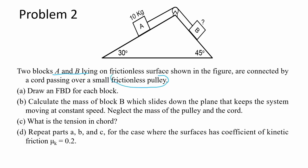Letter A: draw an FBD of each block. Letter B: find the mass of block B as it slides down the plane that keeps the system moving at a constant speed. Letter C: find the tension in the cord. Letter D: repeat A to C but this time there is a presence of friction with the coefficient of kinetic friction UK equals 0.2.